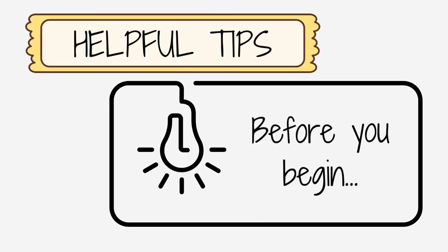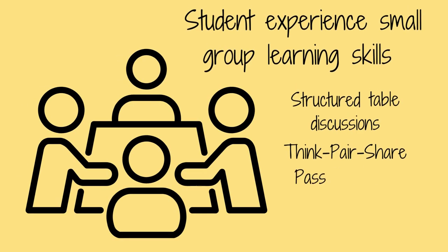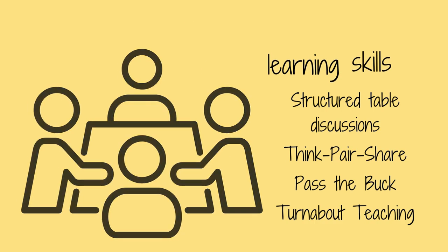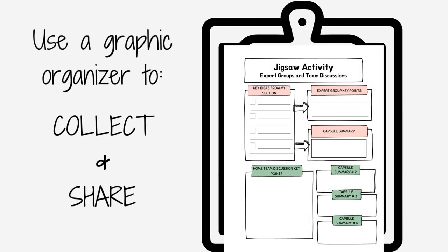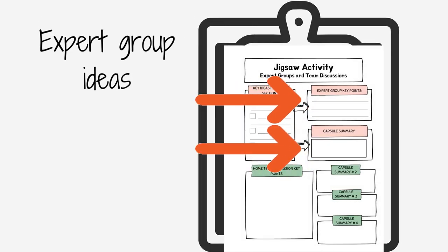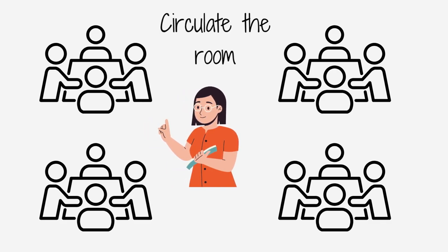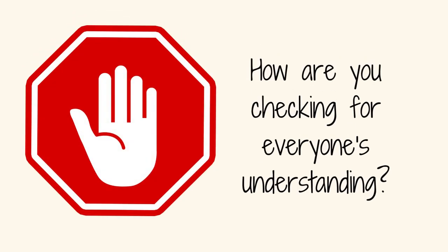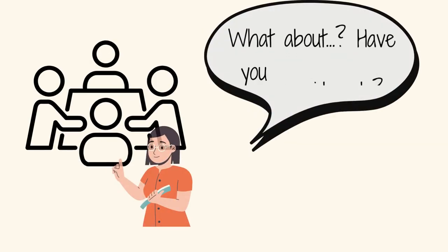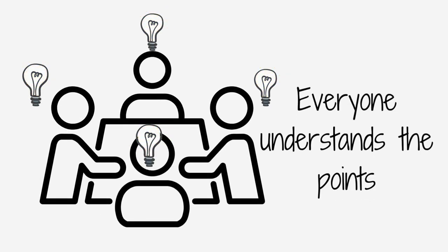Here are some tips to use before starting a jigsaw with students. Give students experience with small group learning skills before participating in the jigsaw strategy. Use a graphic organizer to collect and then share information. Give students space to jot down their individual ideas, then the ideas gleaned from the expert group, as well as a plan for sharing with their home group. Be sure to circulate the room to ensure that groups are on task and managing their work well. Ask groups to stop and think about how they are checking for everyone's understanding and ensuring that everyone's voice is heard. Monitor the comprehension of the group members by asking questions and rephrasing information until it is clear that all group members understand the key points.